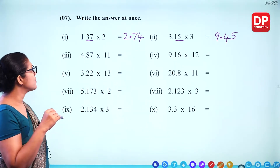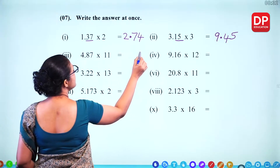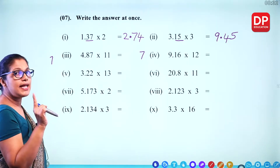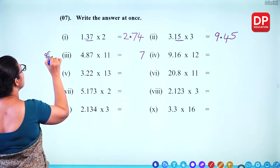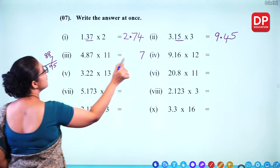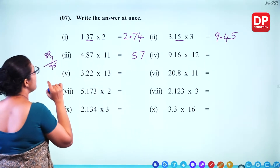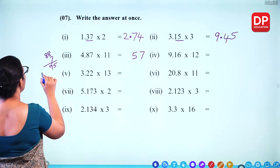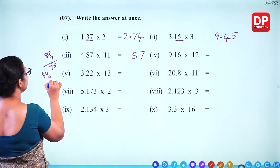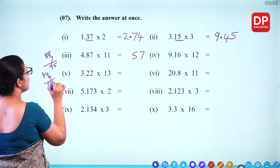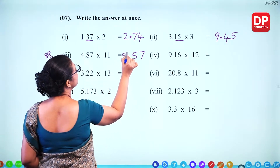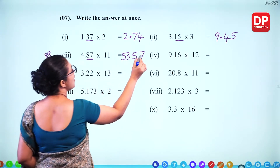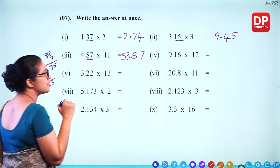For 4.87 times 11: 11 times 7 is 77 (7 remaining), 11 times 8 is 88 plus 7 is 95 (9 remaining), 11 times 4 is 44 plus 9 is 53 — giving 5357. With 2 decimal places, you have to keep 2 places and put the decimal point here.